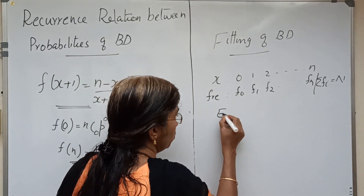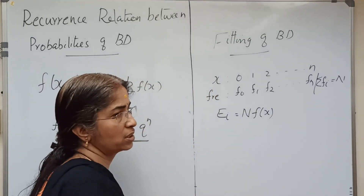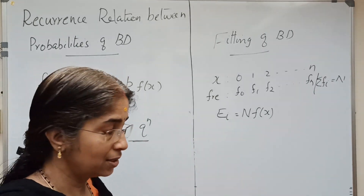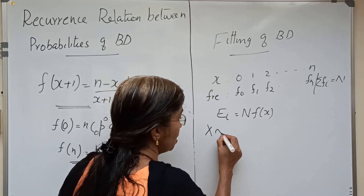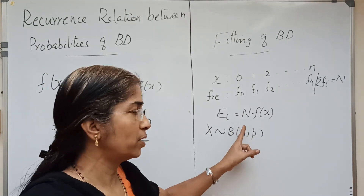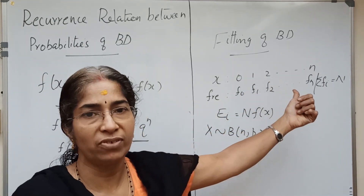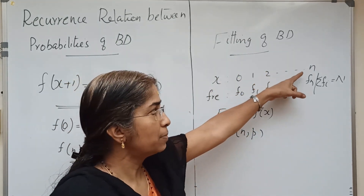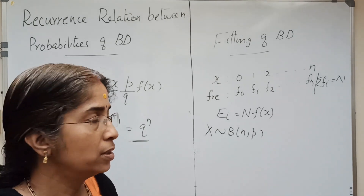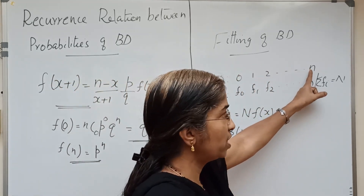Expected frequencies for binomial distribution can be obtained as E-i equals capital N times f of x, where f of x is obtained using binomial probabilities. We assume x as binomial with parameters n and p, so we need to obtain the two parameters of binomial distribution from the given data. The parameter n can be taken as the last value of x, since there exist n plus 1 values for binomial distribution.